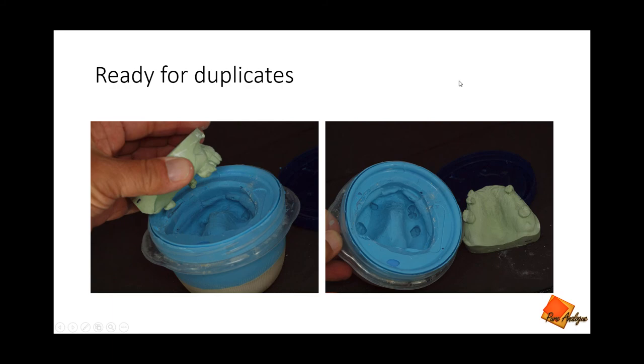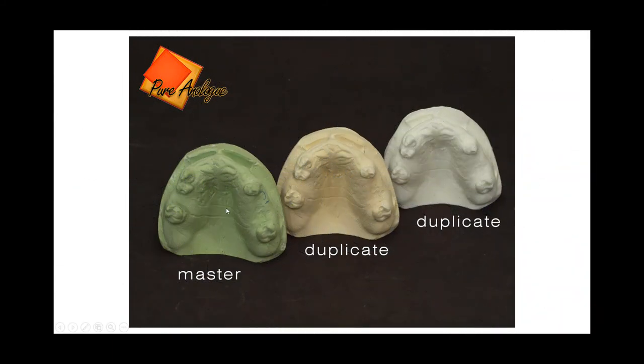Once you've removed that, you can mix up any stone of your preference and pour a duplicate. Here I poured up a resin model from some duplicating resin that I also pick up from SmoothOn Corporation. But the point is that it's identical and inexpensive.